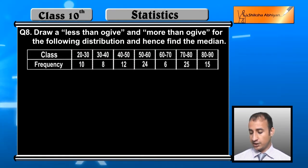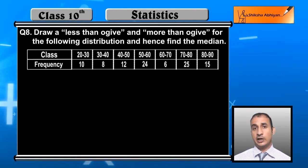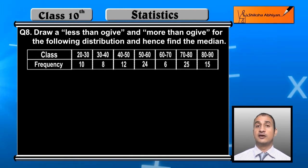Students, here we have class and frequency. Here we have less than ogive and more than ogive and the median.